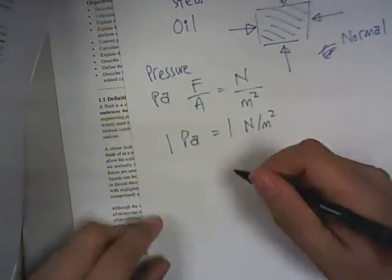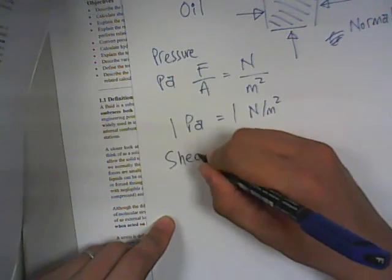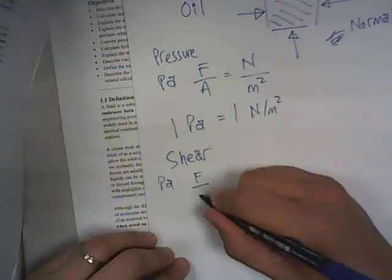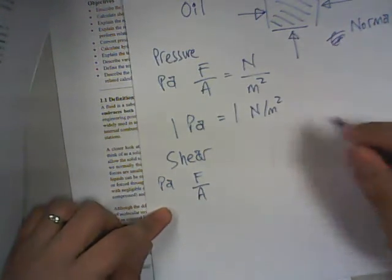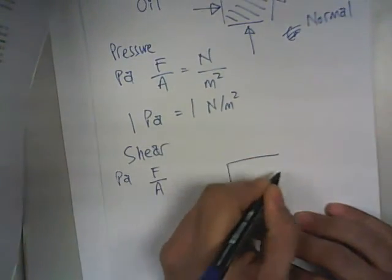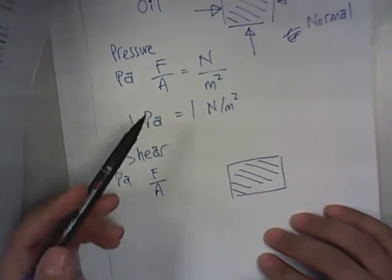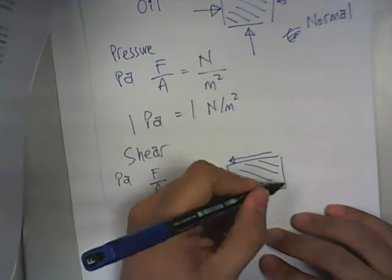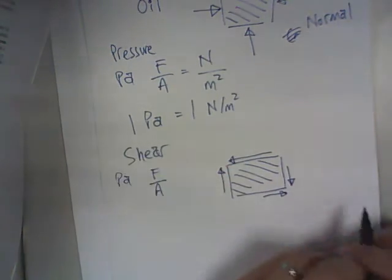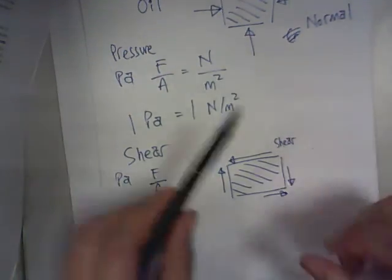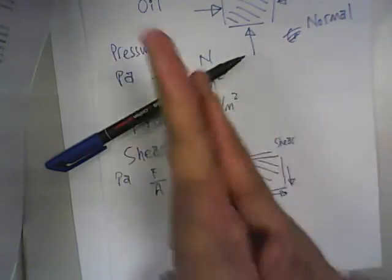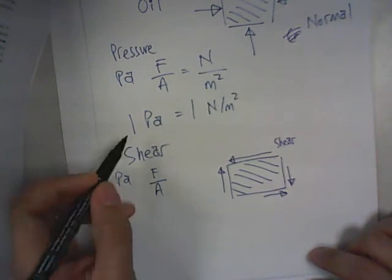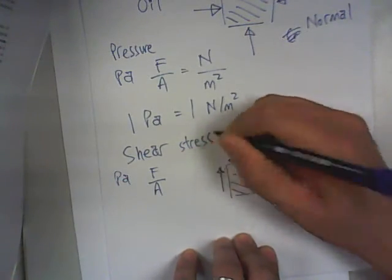Now shear is also in terms of Pascal. It is also force over area. So what kind of force? Imagine the same block. Initially pressure is perpendicular. Shear is actually parallel to the direction of the surface. So this is your shear. Basically your friction along the surface is your shear, and it is also Newton per meter square. That's why we call it the shear stress.